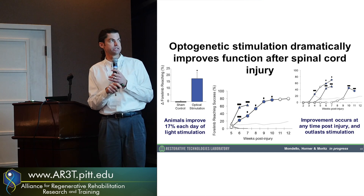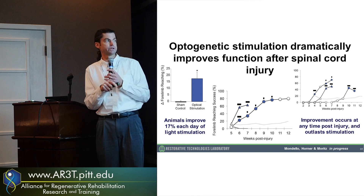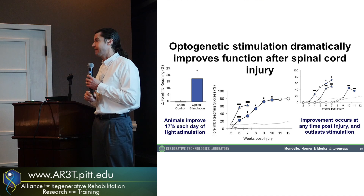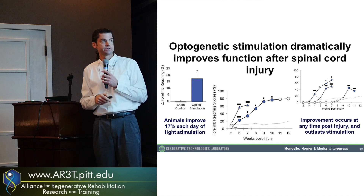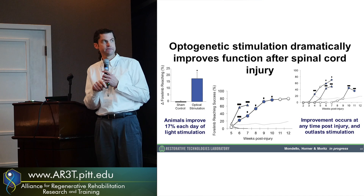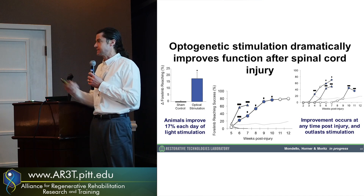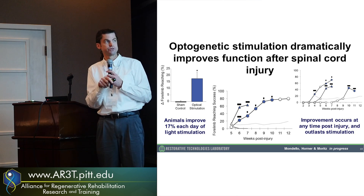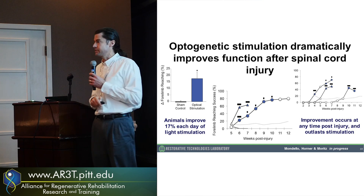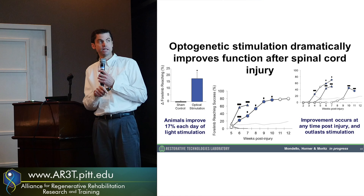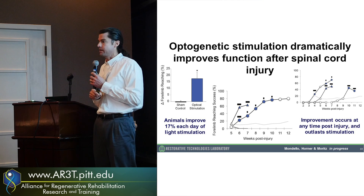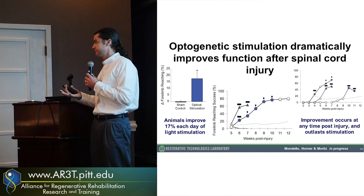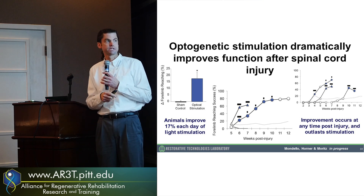Still preliminary data, but Sarah is seeing very dramatic recovery — a full 10 to 17 point increase in BBB score each day that she stimulates with light. That's certainly the fastest recovery we've ever seen. You can't overdo it — if you continue to stimulate, sometimes the animals get worse. But Sarah's developed a nice pattern where she stimulates for a long time in the first few weeks and then titrates that over time, getting animals to nearly pre-injury reaching levels in very few weeks of stimulation. It also doesn't seem to matter when she begins the stimulation — whether at four, six, or ten weeks, we see dramatic increases right in the first few days the light is turned on. We think we're onto something here, and benefits persist even after stimulation ends.